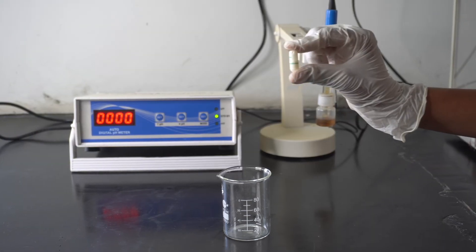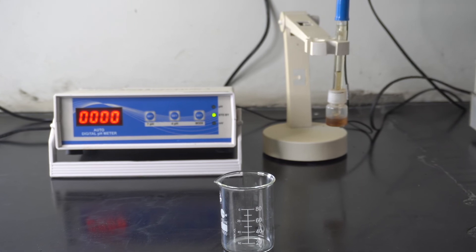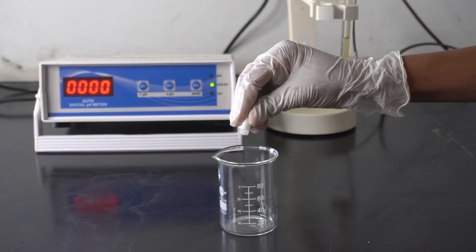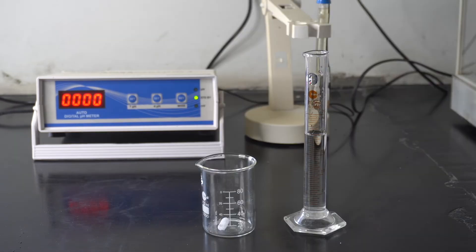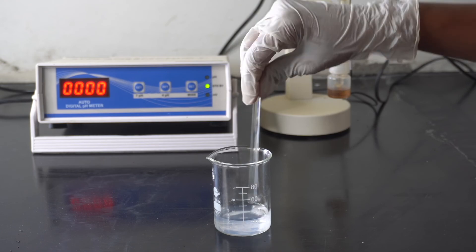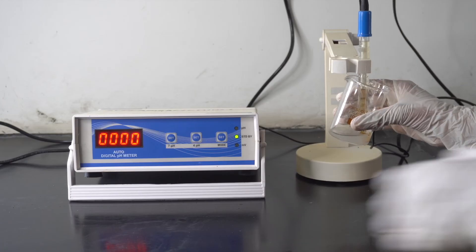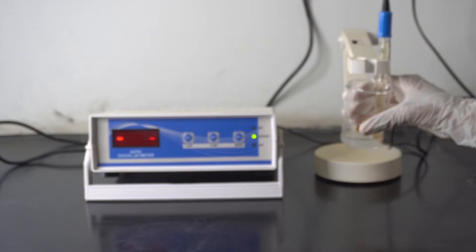First, we need to prepare a pH 7 buffer solution from a buffer solution tablet. For that, we must take out the tablet from the capsule and place it into the beaker. Then add 20 ml of distilled water and stir it until it is completely dissolved. Place the probe in the buffer solution and calibrate it to pH 7.